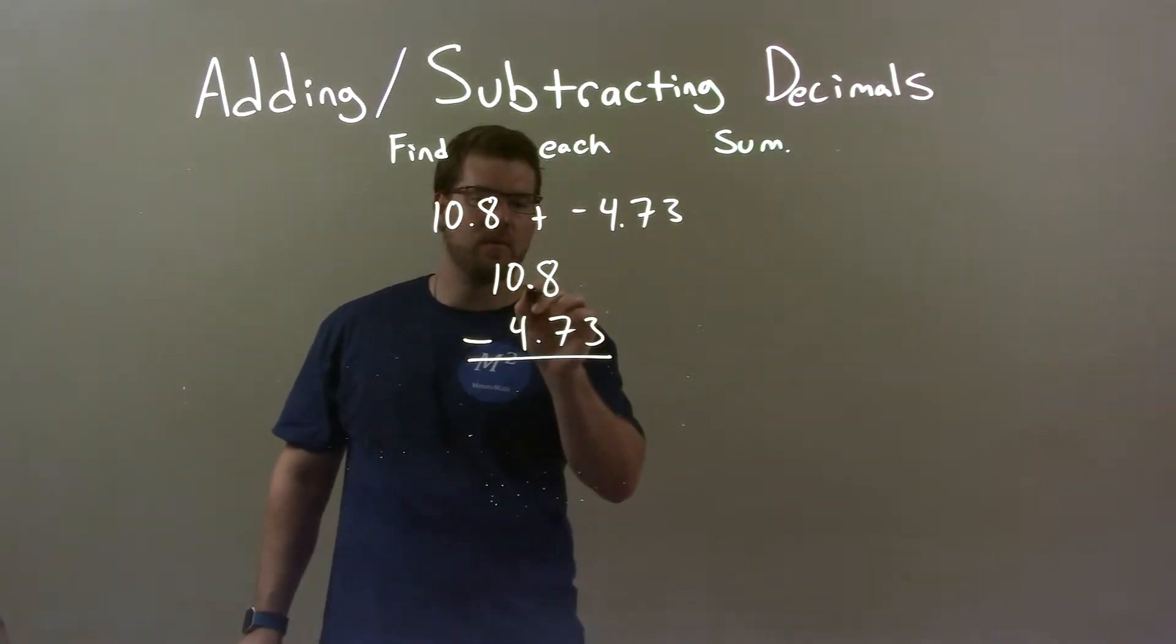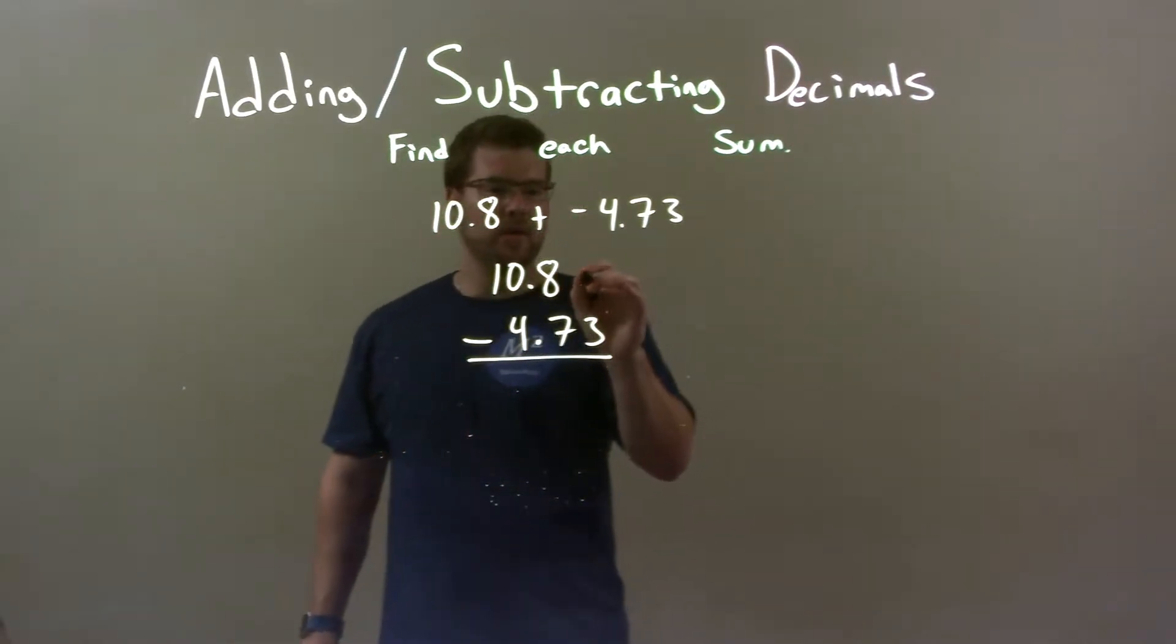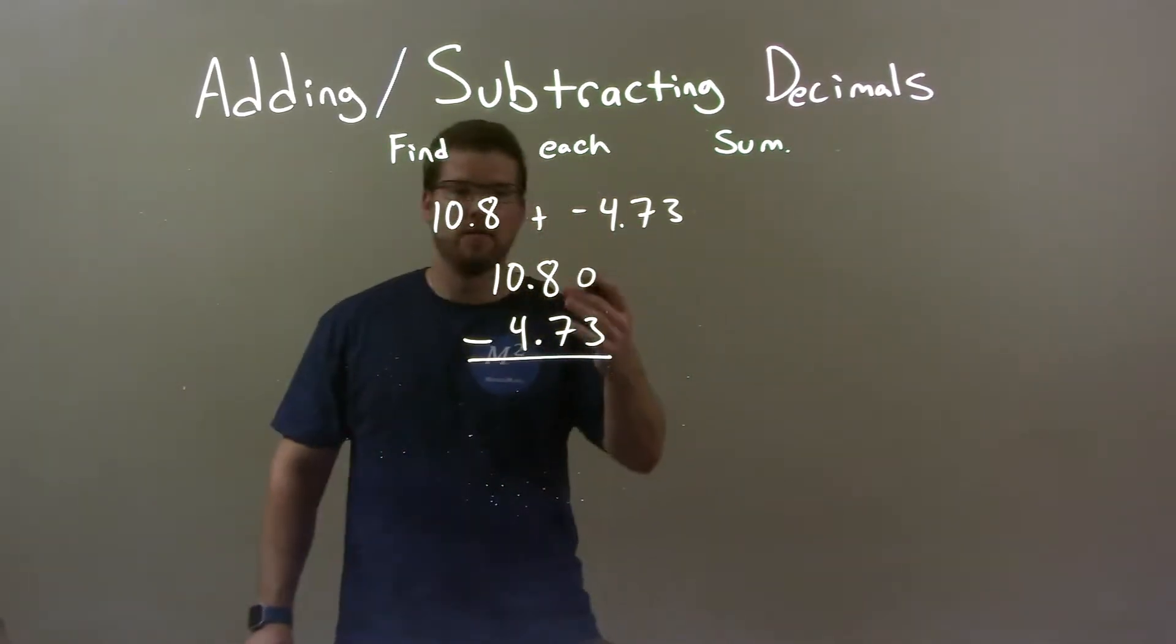And the key is to make sure the decimal places are lined up. So there's an imaginary zero right there. We're going to put that there, and now we've got to subtract it.